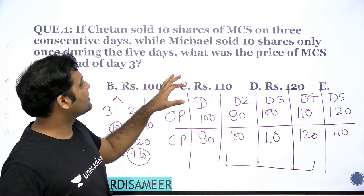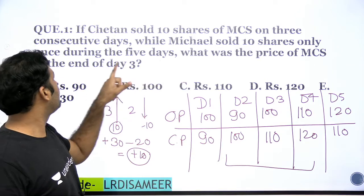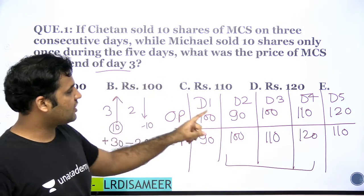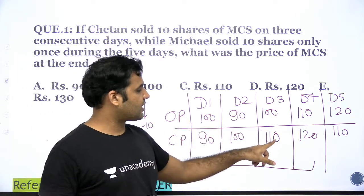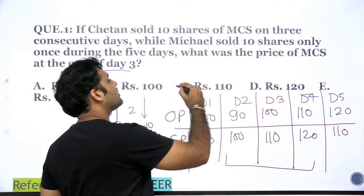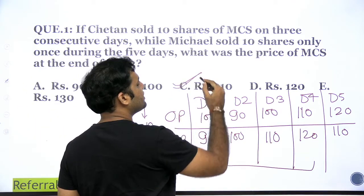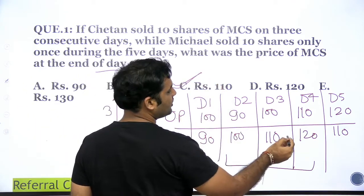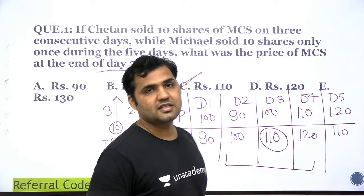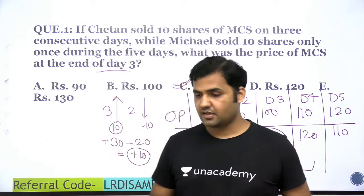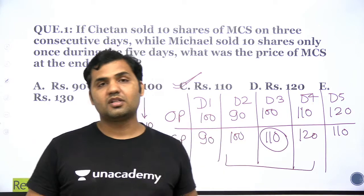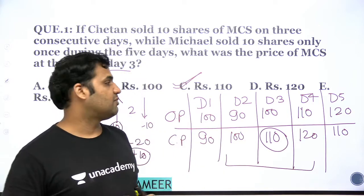Now the question asks: what was the price of MCS at the end of Day 3? The answer is 110. So the correct answer is option C — 110. That's the way to solve this set.